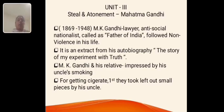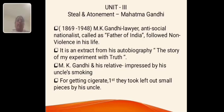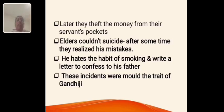Unit 3: Prose — Steal and Atonement by Mahatma Gandhi. M.K. Gandhi was born in the year 1869 and died in 1948. He is a lawyer and a social nationalist, also called Mahatma and the Father of the Nation. He followed non-violence in his life. Steal and Atonement is an extract taken from his autobiography, The Story of My Experiments with Truth. While he was a small boy, he was influenced by his uncle into a smoking habit. He stole money to fund it secretly. After some time he felt ashamed and stopped that habit. He also tried to commit suicide for his mistake, but at last admitted his mistake to his father and decided never to repeat such actions.